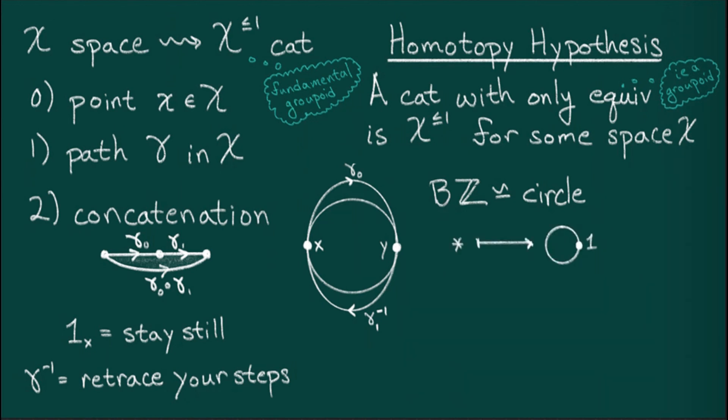This correspondence takes a number a, which recall is a map in BZ, to the path which loops around the circle a times. More formally, it can be written as e to the minus 2 pi i theta over a. In terms of the diagram in the center, the composition of these two maps represents minus 1, as it's going clockwise.